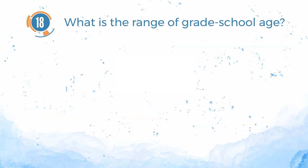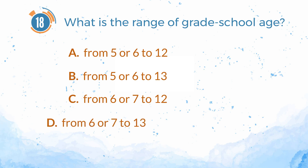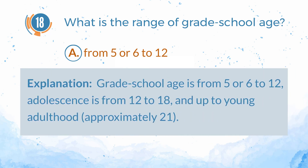Number 18. What is the range of grade school age? A. From 5 or 6 to 12. B. From 5 or 6 to 13. C. From 6 or 7 to 12. D. From 6 or 7 to 13. The answer is A, from 5 or 6 to 12. Explanation: grade school age is from 5 or 6 to 12; adolescence is from 12 to 18, and up to young adulthood, approximately 21.